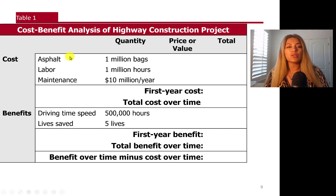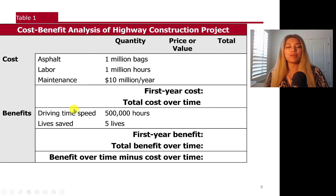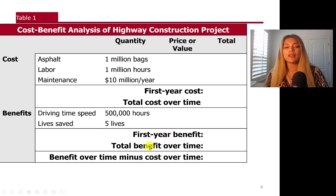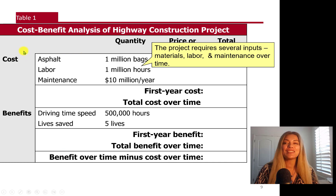Here is a table showing the cost-benefit analysis of a highway construction project. Under costs you have asphalt, labor, and maintenance, with columns for price, quantity, and total — first-year cost and total cost over time. We also have benefits: driving time saved (500,000 hours), lives saved (five lives), first-year benefit, and total benefit over time. We'll then do benefit minus cost, but that's for the next part. Let's start with the costs.